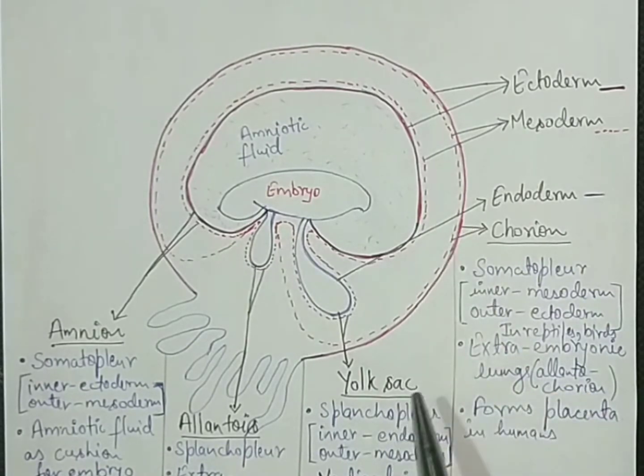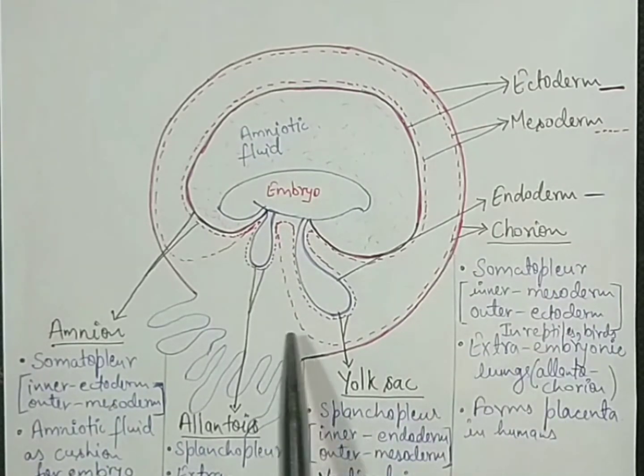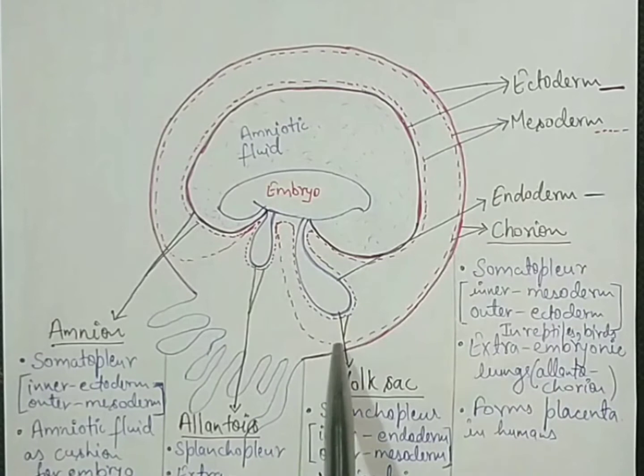In reptiles and birds, it works as extra embryonic lungs and is known as allantochorion because it is formed by the fusion of allantois and chorion. But in humans it forms placenta. The chorion forms placenta in humans.